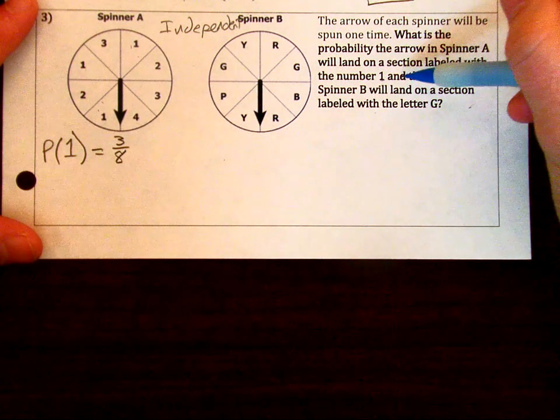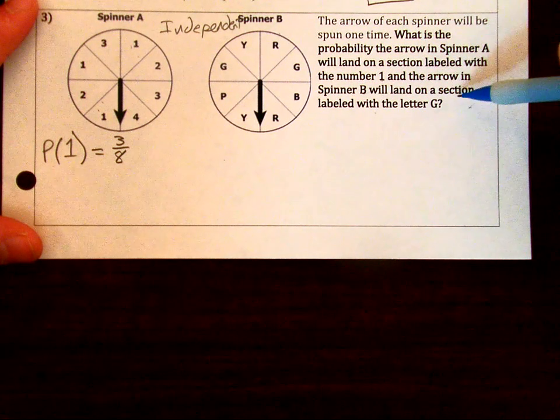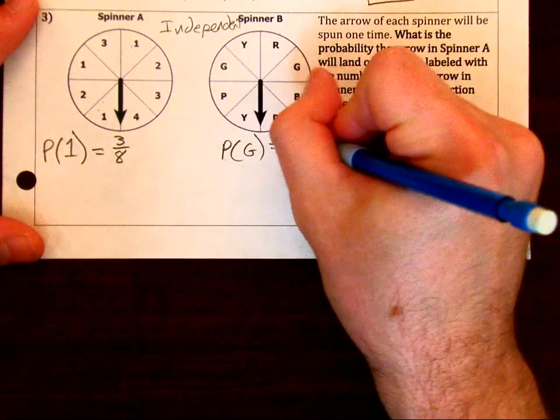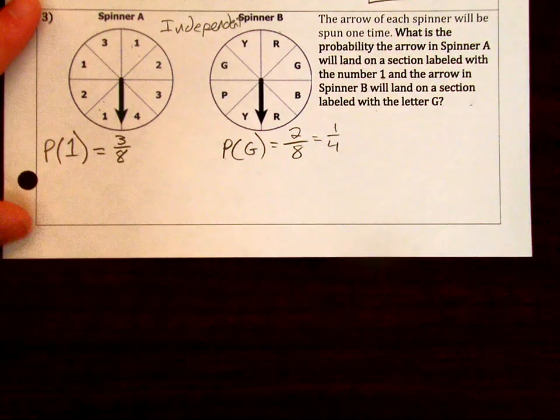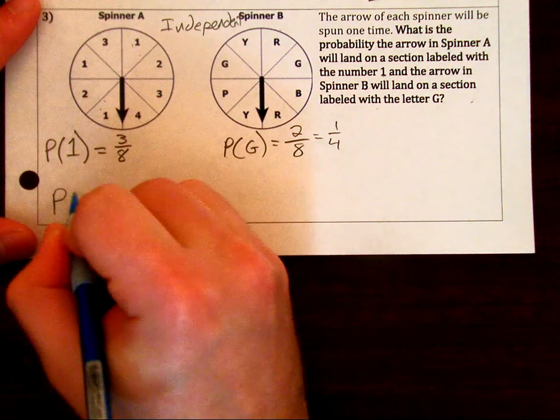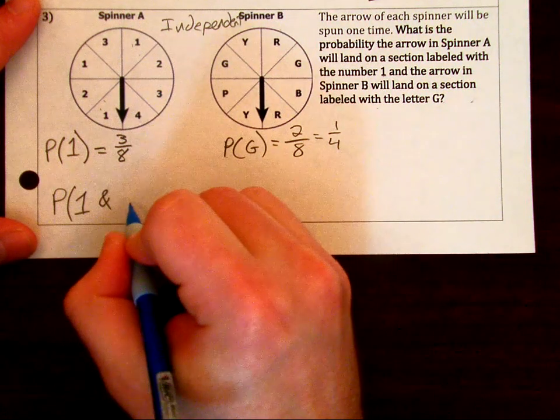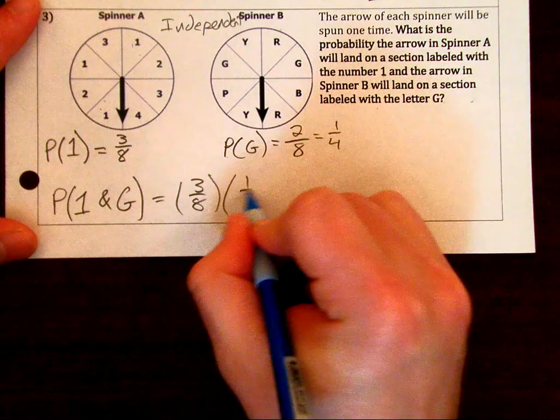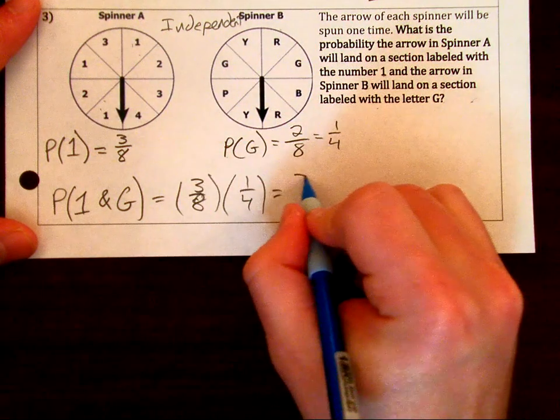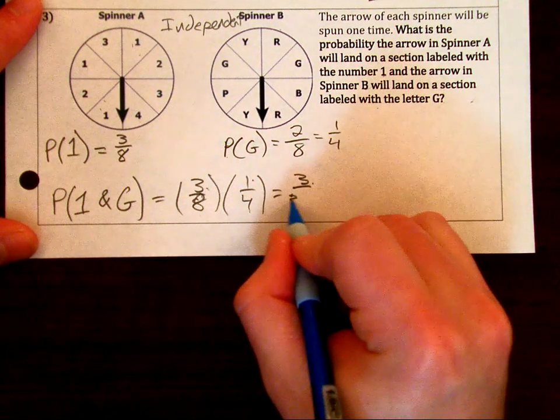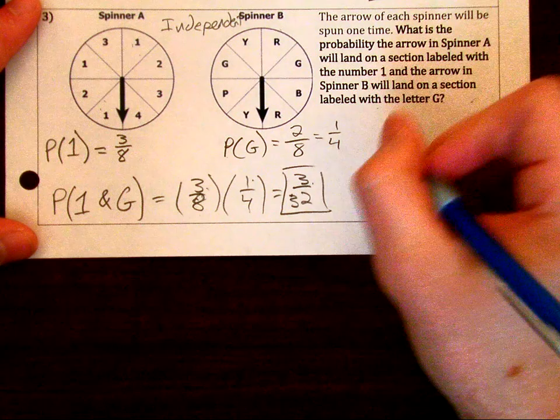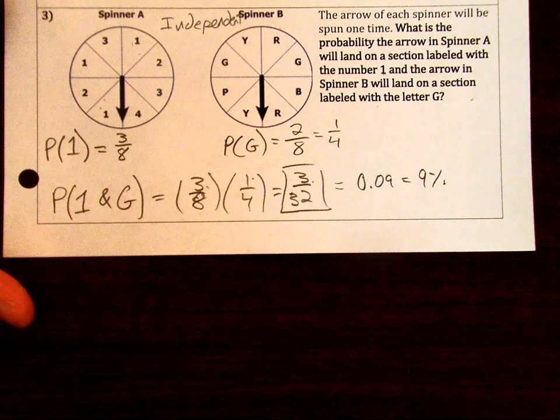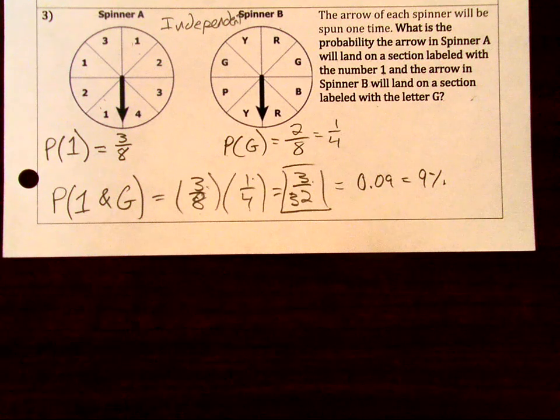For spinner B, how many sections are labeled G? Probability of landing on a G. There's also eight sections, and two of which are the letter G. We can simplify that fraction as one-fourth. Make sure you have these two together. So you multiply three over eight and one-fourth. Three times one is three. Eight times four is 32. And you have your fraction, three over 32. If you wanted to change it to a decimal and a percent, you can. Make sure that you're reading the answer choices carefully. Depending on what the answer choices are, you might need to change it to a specific type.